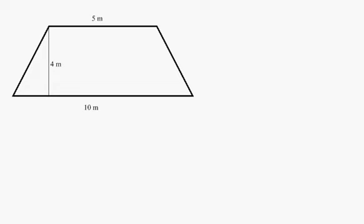A trapezoid is a quadrilateral, which is a shape with four sides. One pair of sides are always parallel.